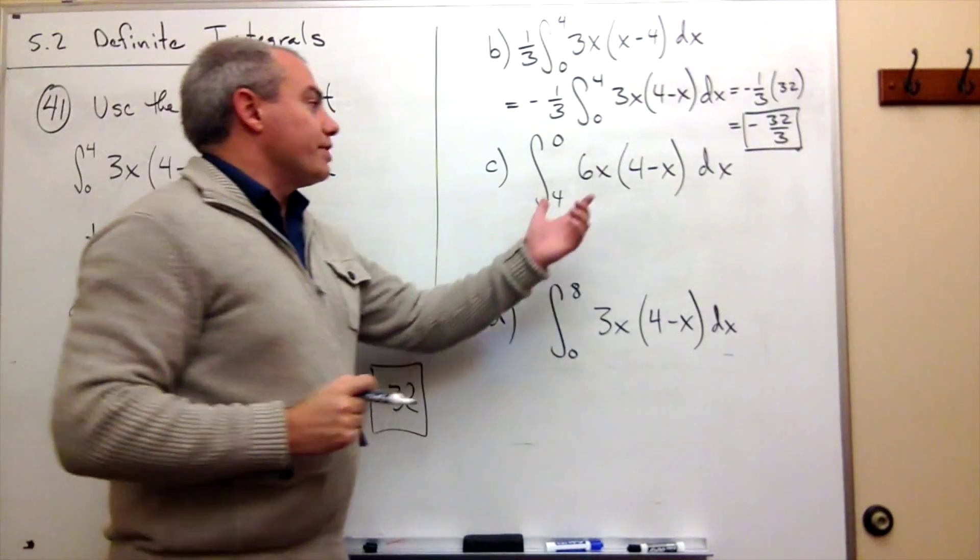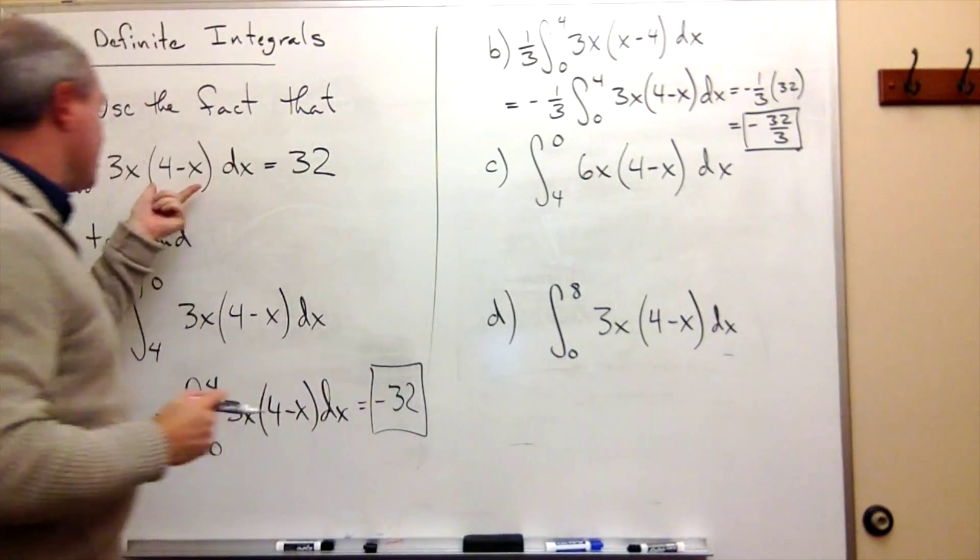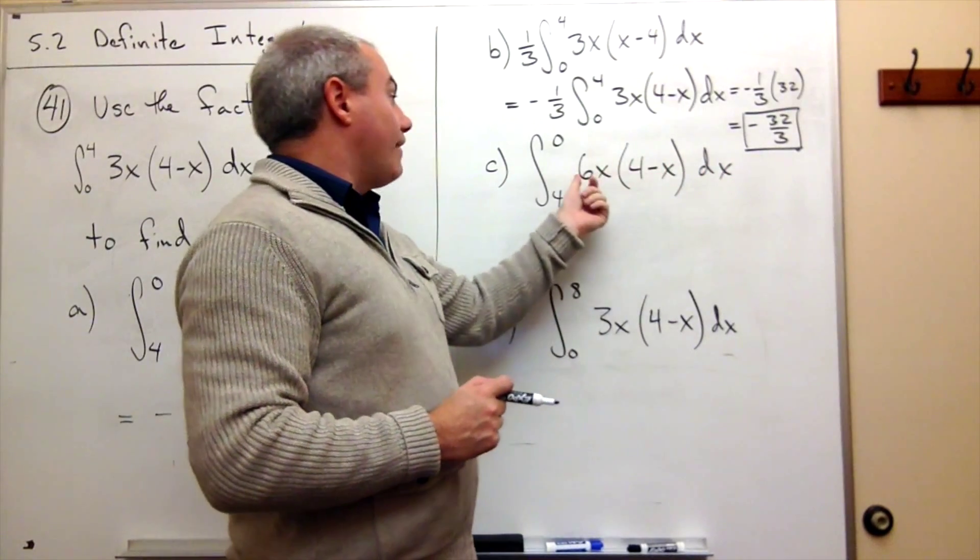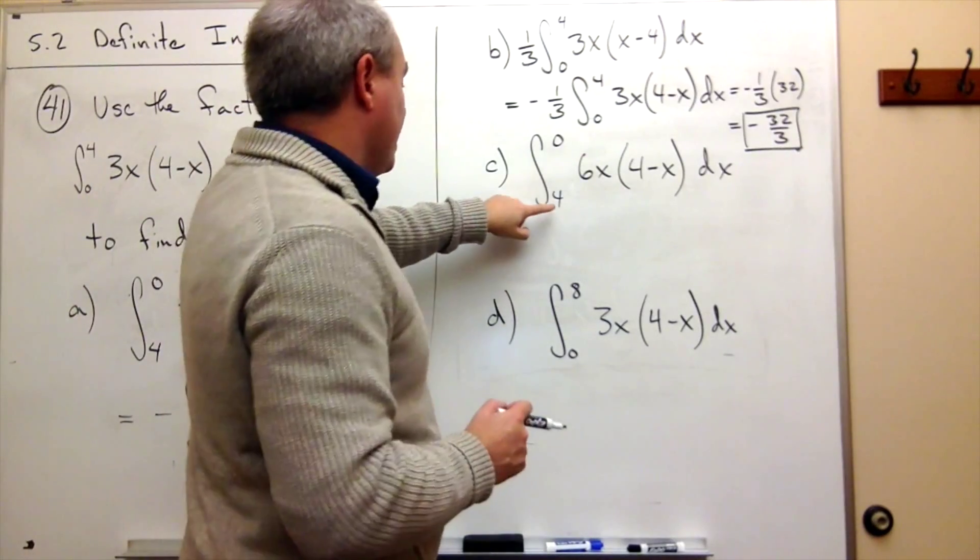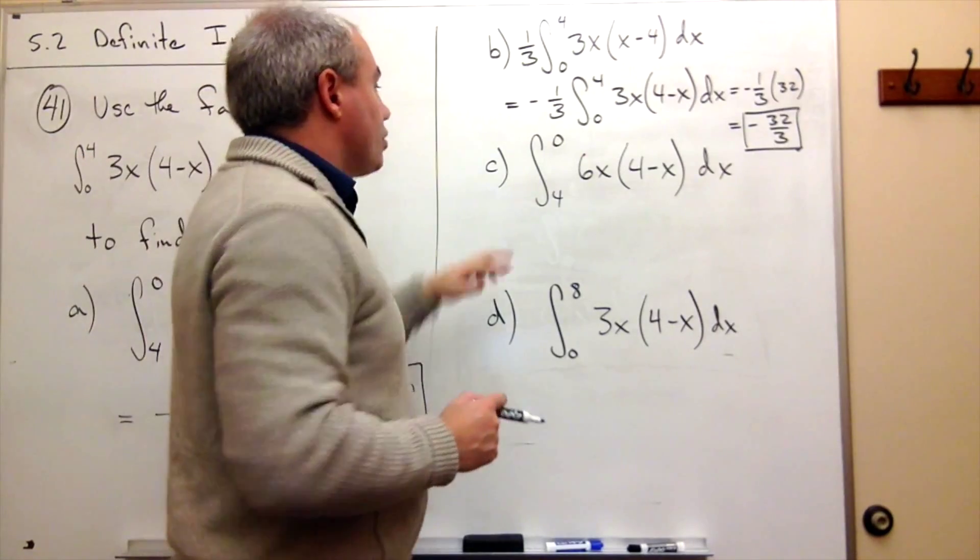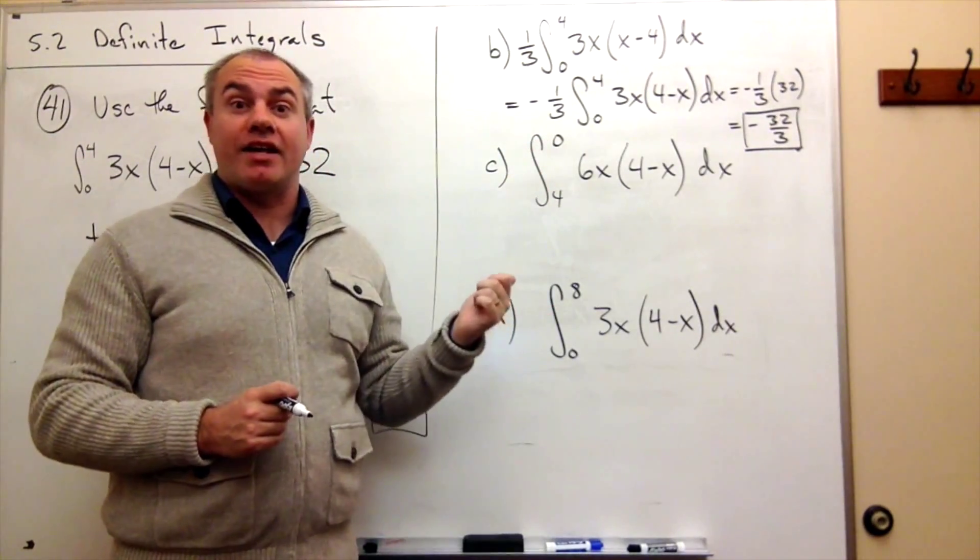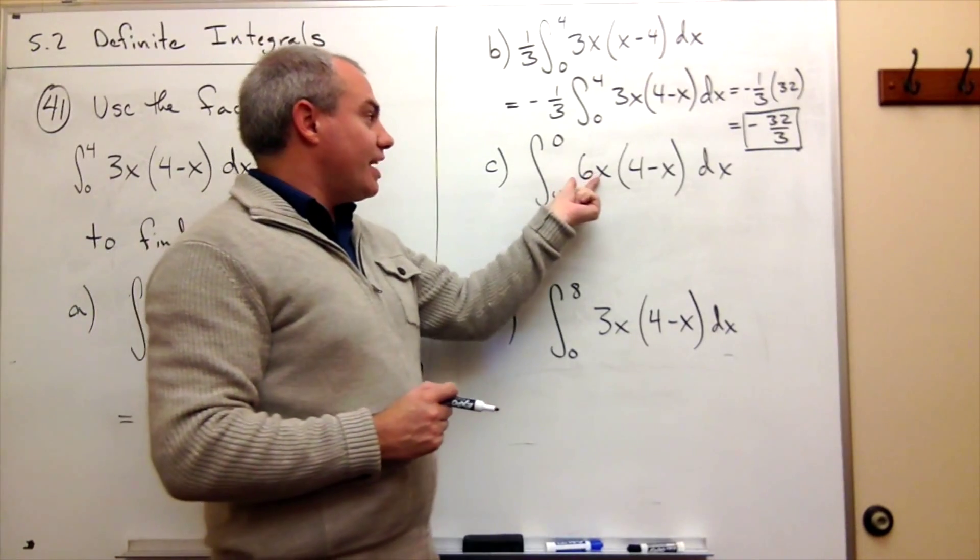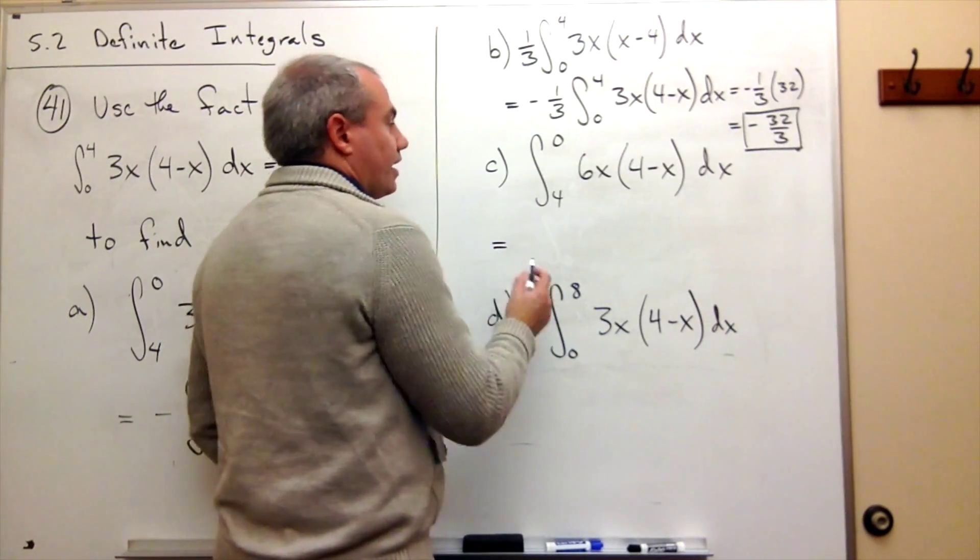Now let's look at part c. In part c, the 4 minus x piece is right. I've got the dx. I've got a 6x instead of 3x. And I've got integral from 4 to 0 instead of from 0 to 4. So I need to flip these guys. We know how to do that now. I just add a negative to the front. And this 6 needs to be a 3. But let me rewrite this thing.